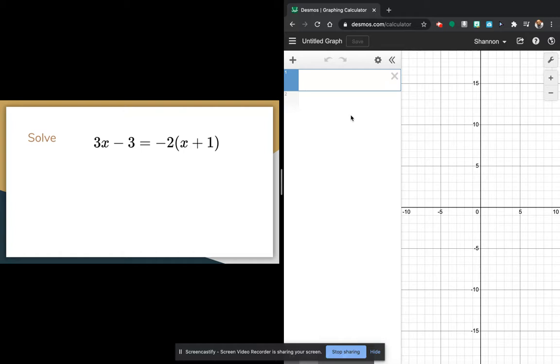You're going to do y equals whatever that equation is. So on the left-hand side, notice the equation says 3x minus 3. So we're going to type in y equals 3x minus 3. That's just a linear equation or a line.